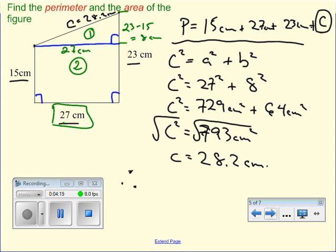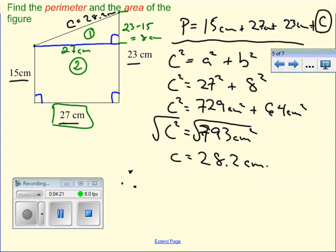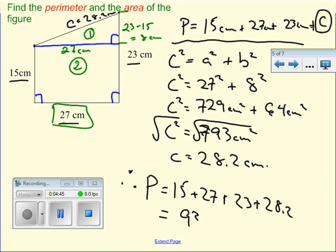So C equals 28.2 centimeters. So therefore, I can figure out my perimeter. 15 plus 27 plus 23 plus 28.2 gives me a grand total of 93.2. So that's my perimeter of this composite figure.